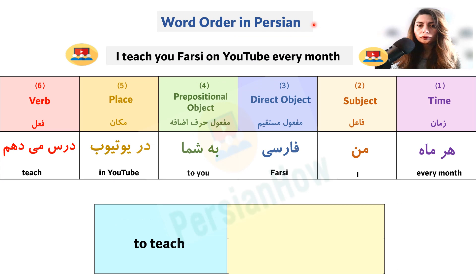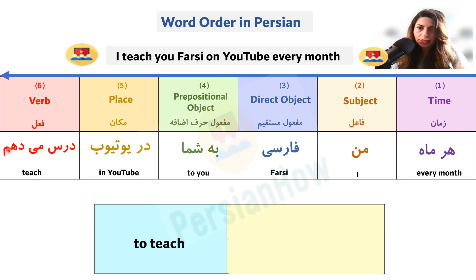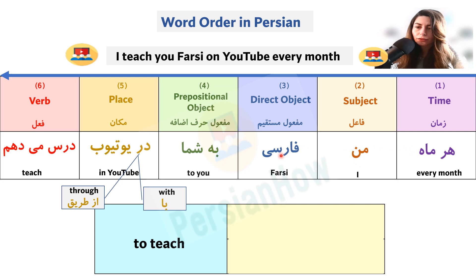Next we're going to look at each element's flexibility. Let's first go over the sentence we'll be using: 'har mah man farsi be shoma dar YouTube dars midaham.' Note that 'dar' can also be replaced with 'ba' or 'az tariq,' so you could say 'ba YouTube' or 'az tariq YouTube' — either works. 'Dar' is more common, so we'll go with that.